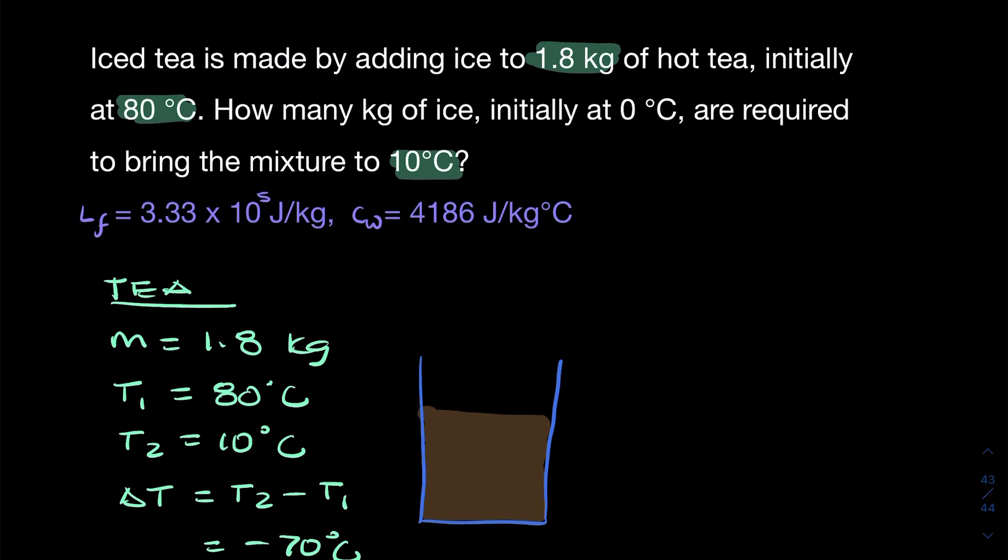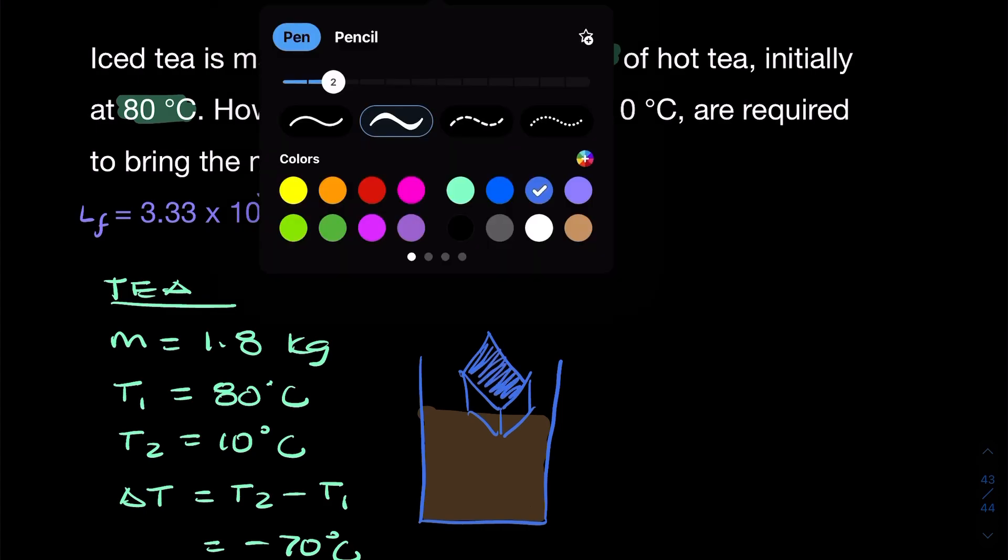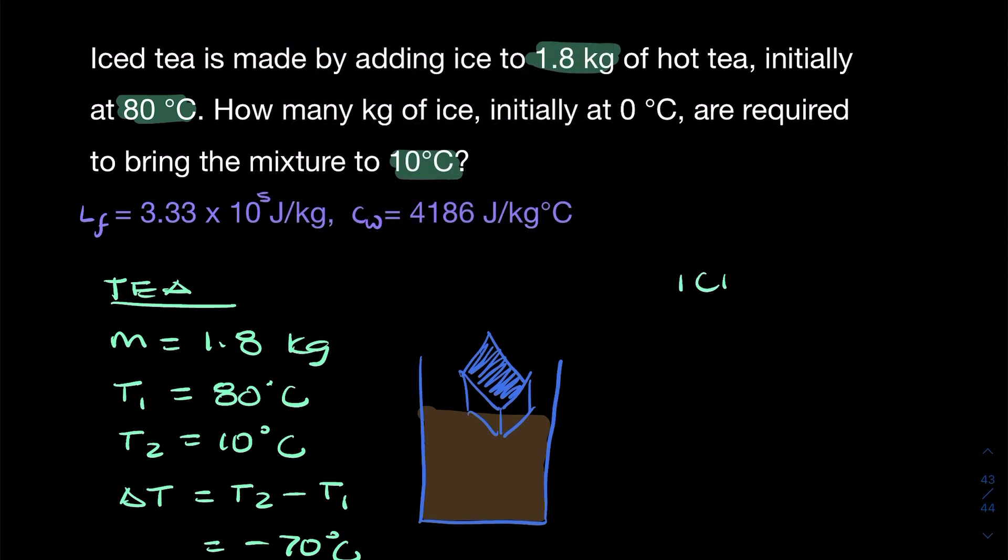Now to this tea we are adding a huge chunk of ice, and we need to write down what we know about this ice. We don't know the mass of the ice. We know its initial temperature is zero, so it's frozen ice at its melting point. We know the final temperature is 10 degrees Celsius. So after melting, the change in temperature will be 10 take away zero equals 10 degrees Celsius.